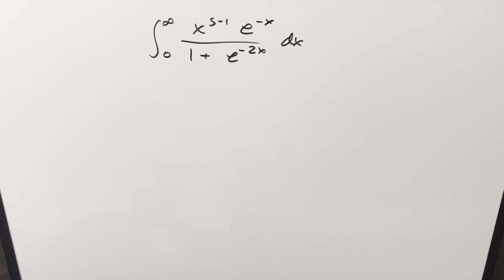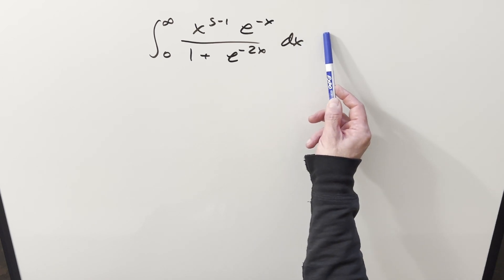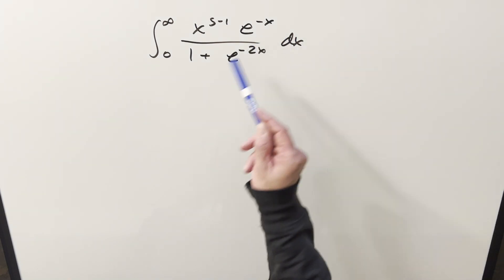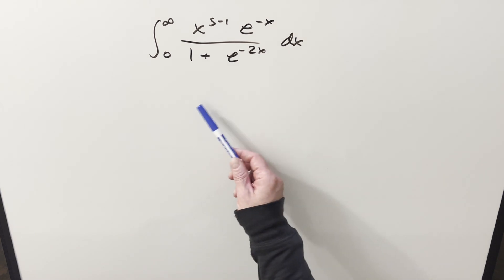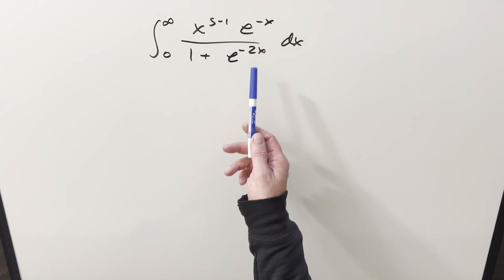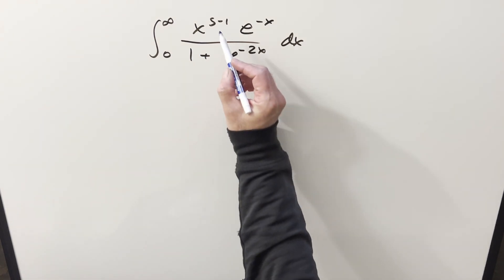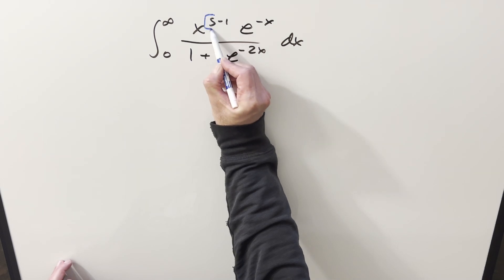One thing to notice is you could see this in a bunch of different forms, because if you just multiply in e to the x, this part's going to go away. Or you could write this with cosh in the denominator. You could have a substitution and see lnx in it. But to get started with it, I'm just going to use it in this form and try to get a general formula for this in terms of s.